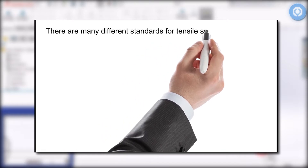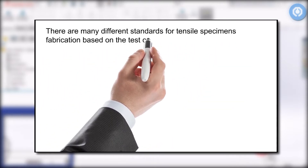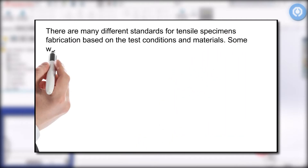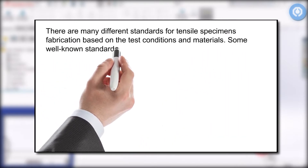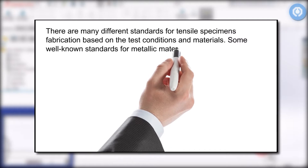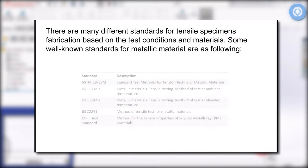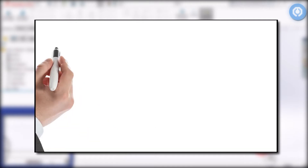There are many different standards for tensile specimen fabrication based on the test conditions and materials. Some well-known standards for metallic material are ASTM E-8, ISO 6892, JIS Z2241, and MPIF standard.